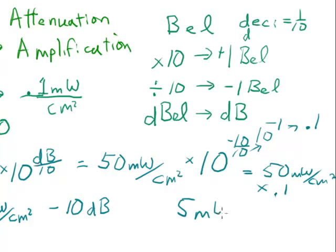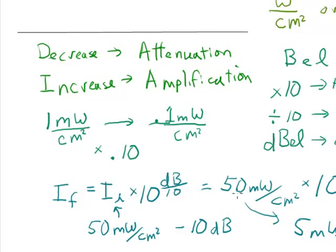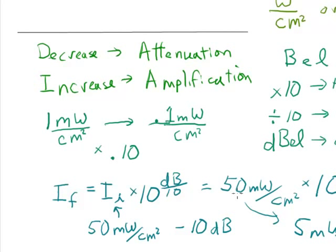And that's equal to 5 milliwatts per square centimeter. So a negative 10 decibel change will result in dividing this by 10.